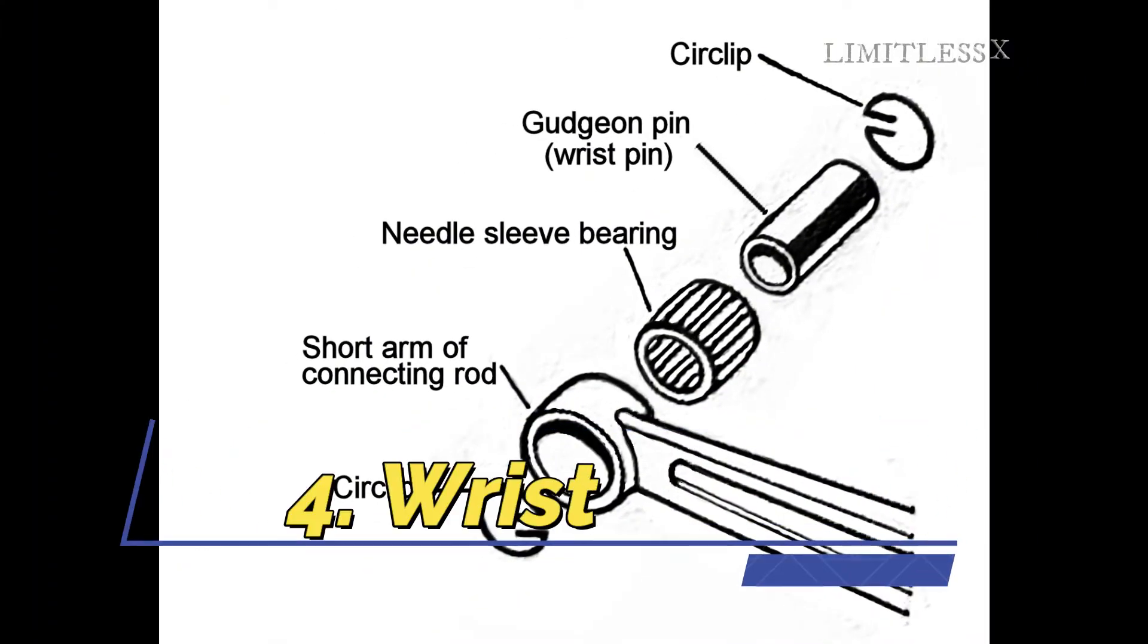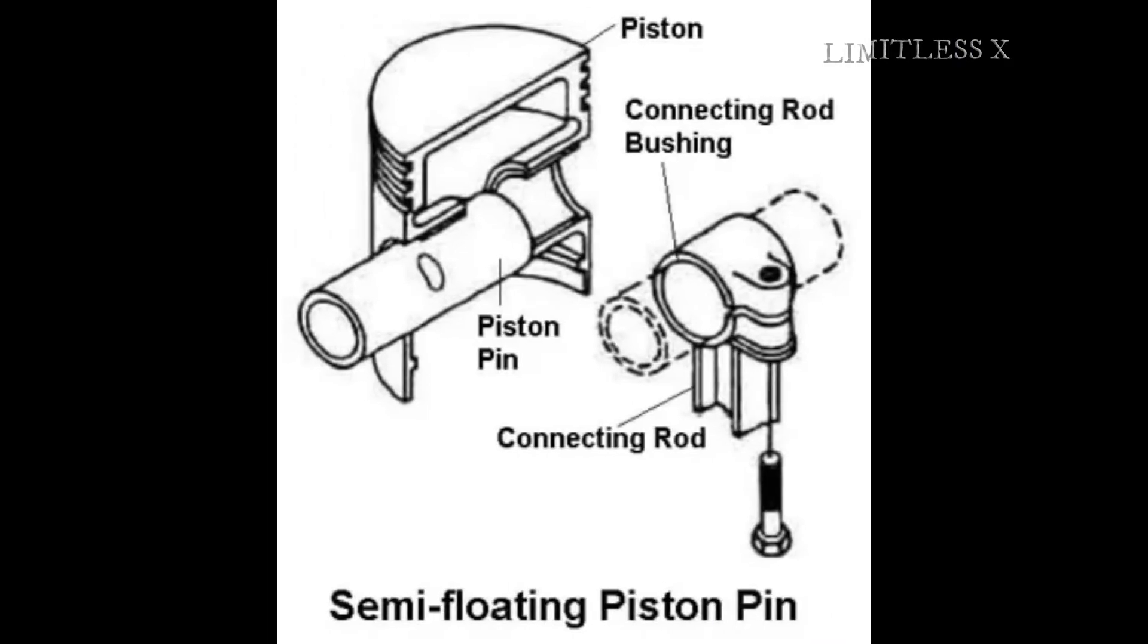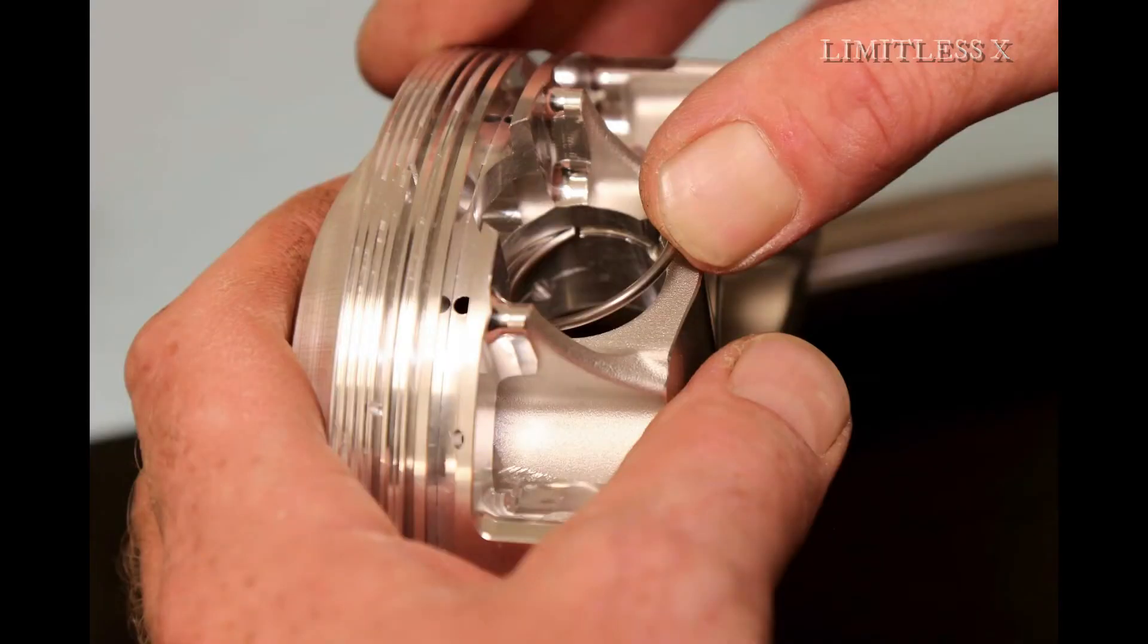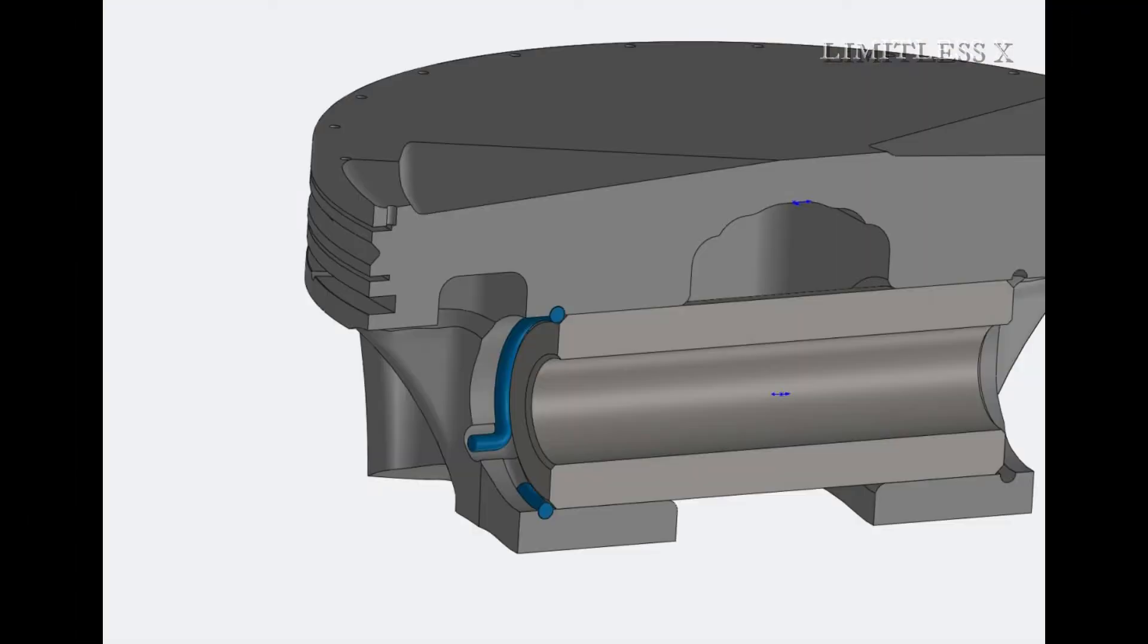4. Wrist pin. Connecting rods pivot around a pin that helps push the piston crown up and down. This pin is known as a wrist pin or gudgeon pin, and fits into the bushing of the piston skirt. Wrist pins are only present in pistons that have moving connecting rods.